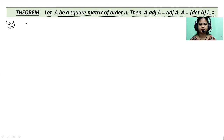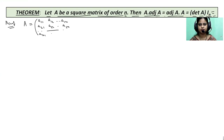First we need to take a matrix A which is a square matrix of order n. We write A as a_11, a_12, ..., a_1n; a_21, a_22, ..., a_2n; and last row a_n1, ..., a_nn. This is our matrix A. Now the adjoint of A — we know the adjoint of A is the transpose of its cofactor matrix.